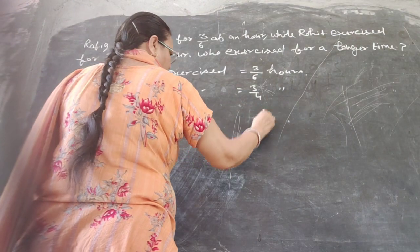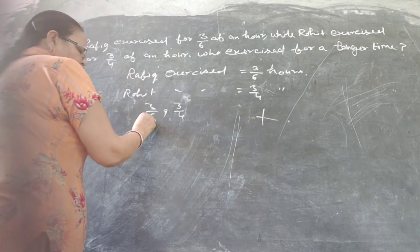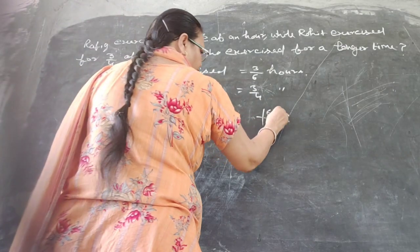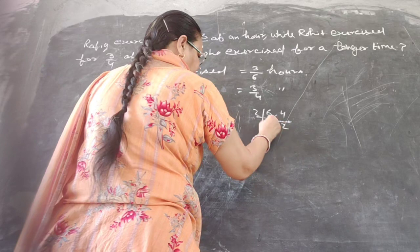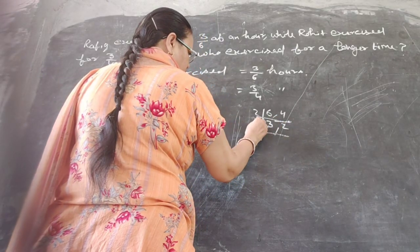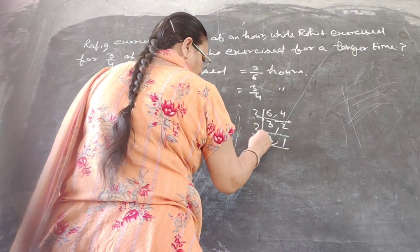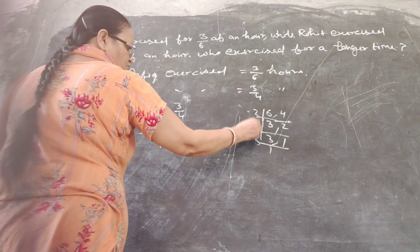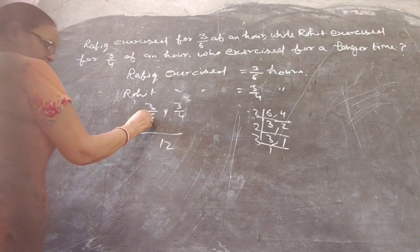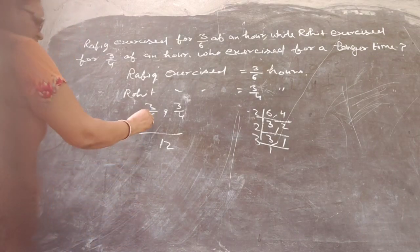The denominators are 6 and 4. 2 times 3 equals 6. 3 times 1 equals 3. The LCM is 12. 2 times 2 equals 4. 3 times 2 equals 6. Now 6 times 2 equals 12.